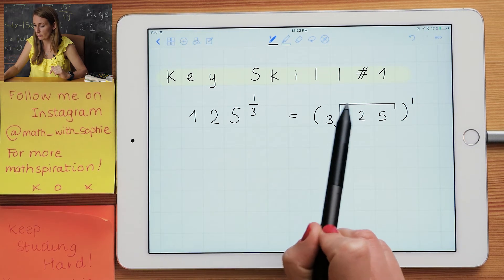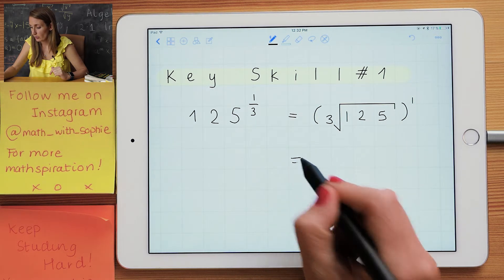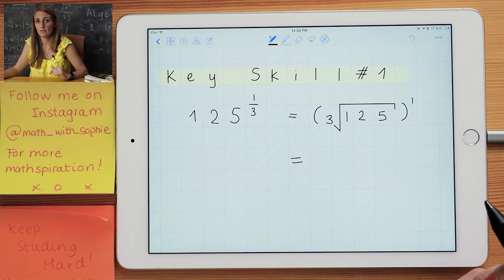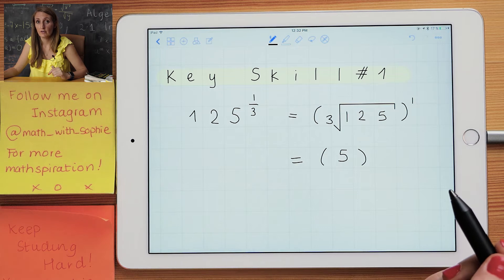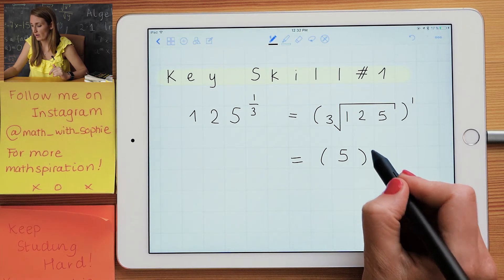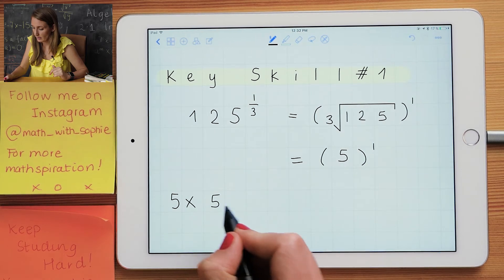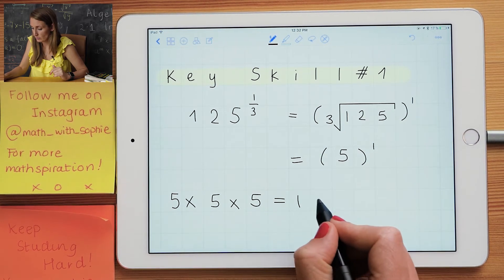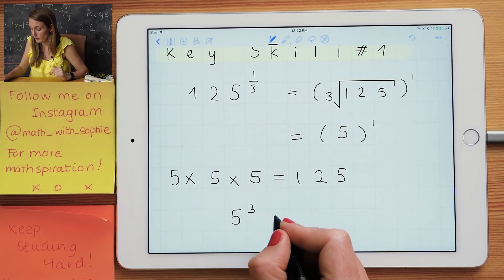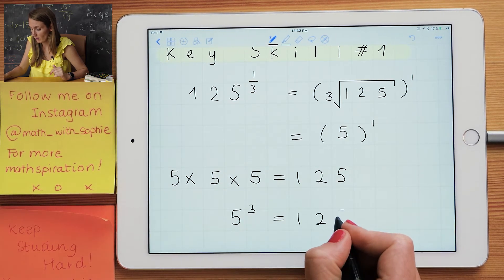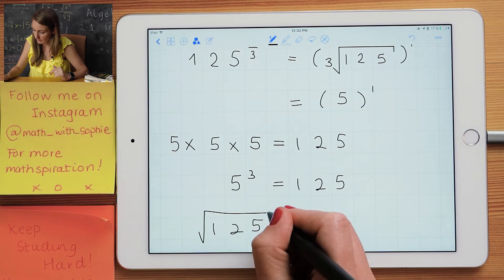Now the cube root of 125 is 5, and that's because 5 cubed is 125. So 5 times 5 times 5 is equal to 125. So that means 5 cubed is equal to 125, but that also means that the cube root of 125 is equal to 5.